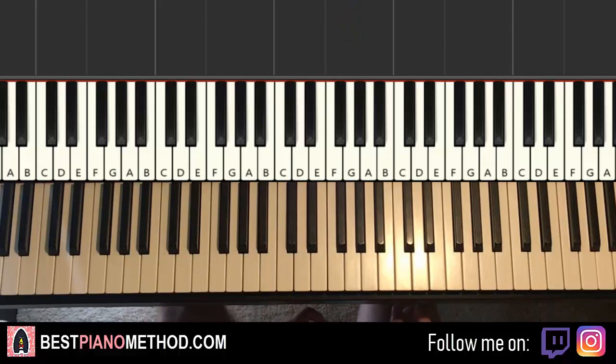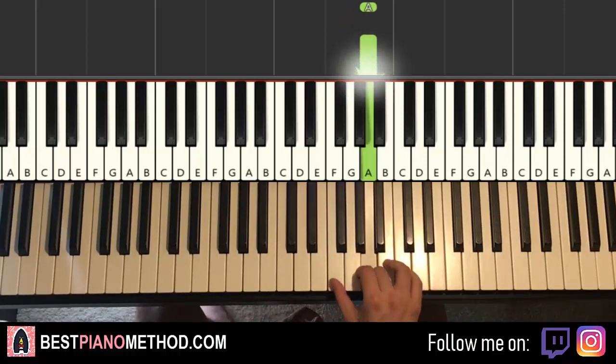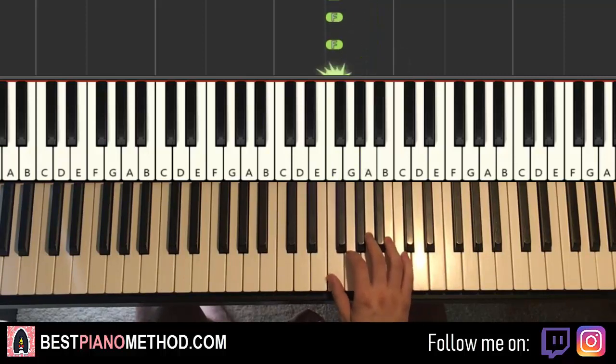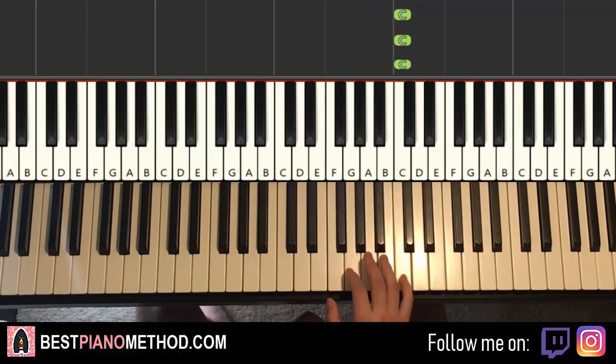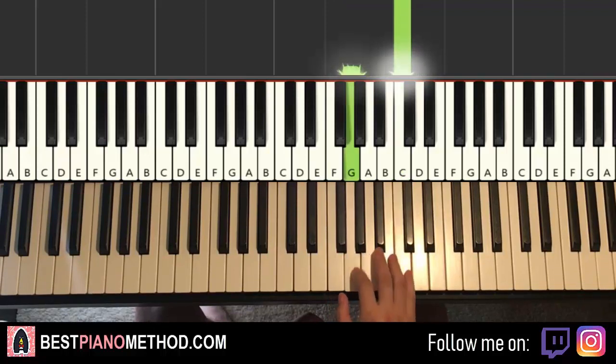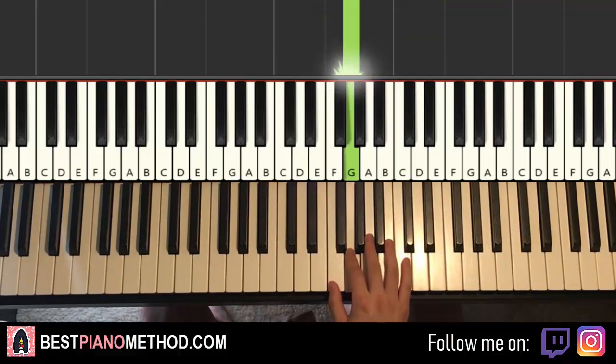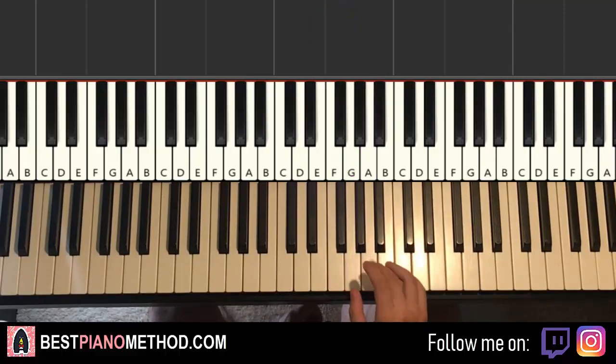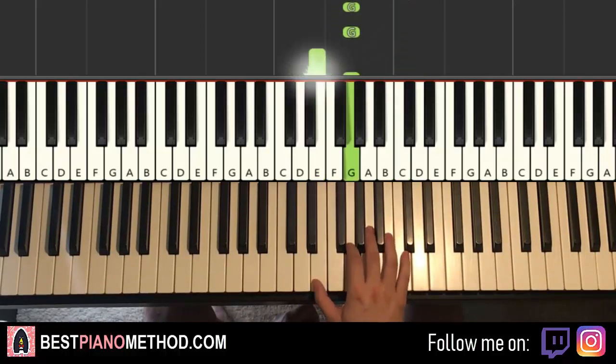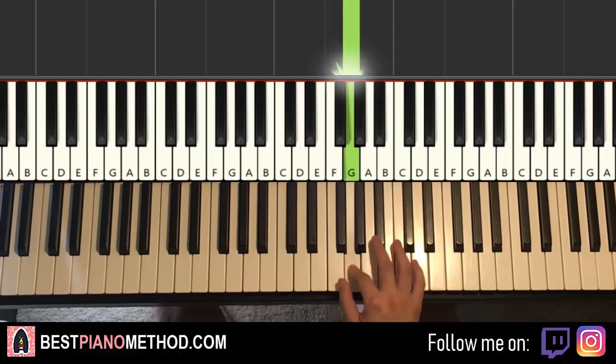So yeah, it's a little bit different compared to the first part. Let's do it again. So it goes eight A's. Down to F for eight times. Down to E, G. And that's it for the right hand. So yeah, that's that for the right hand for this second part. So remember, it's continuous.